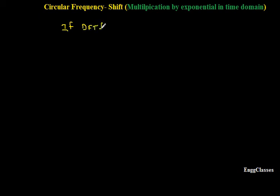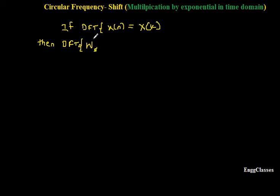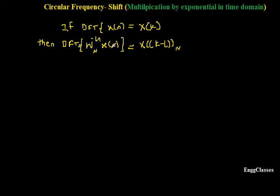I would define it in this way: if DFT of x[n] can be written as X[k], then DFT of W_N to the power minus L times n, multiplied by x[n], is equal to X[k minus L]. This is the definition of circular frequency shift of DFT. It is also known as multiplication by an exponential in time domain, because here we are multiplying the signal x[n] with W_N to the power minus Ln.